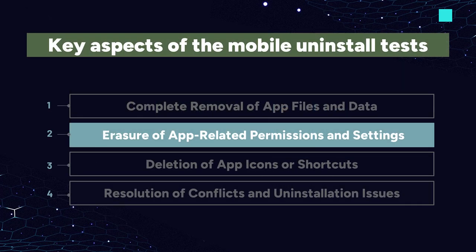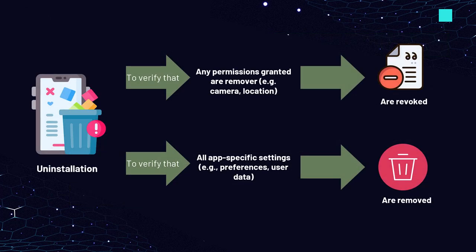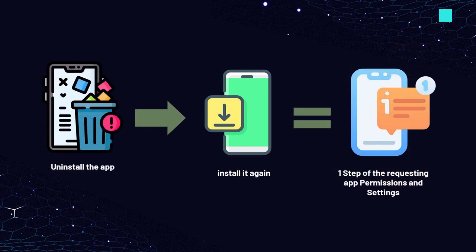The next key aspect tested during mobile uninstall tests is erasure of app-related permissions and settings. During uninstallation, it's crucial to verify that any permissions granted to the app — e.g., camera and location — are revoked, and all app-specific settings, e.g., preferences and user data, are removed. This safeguards user privacy and security. For example, after uninstalling the application and trying to install it again, the user should see the first step of the requesting app permissions and settings.